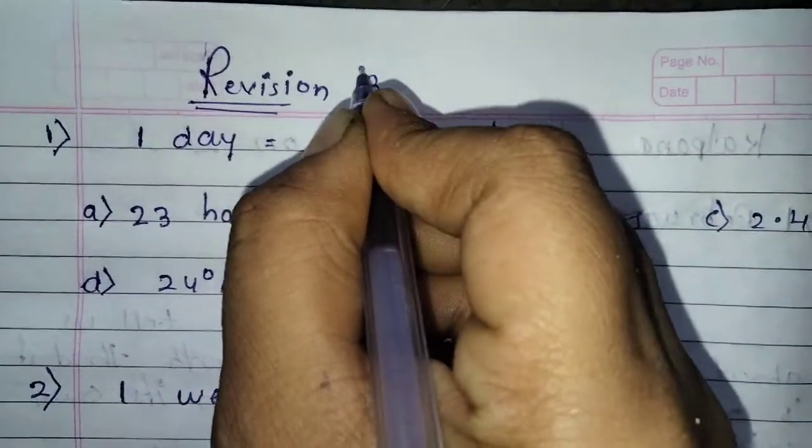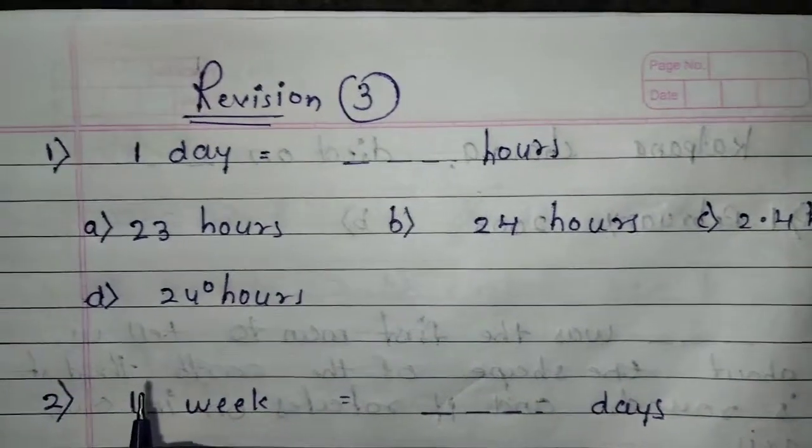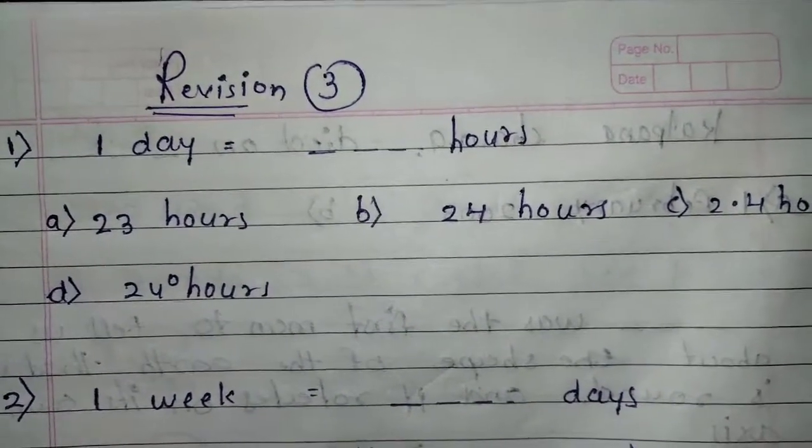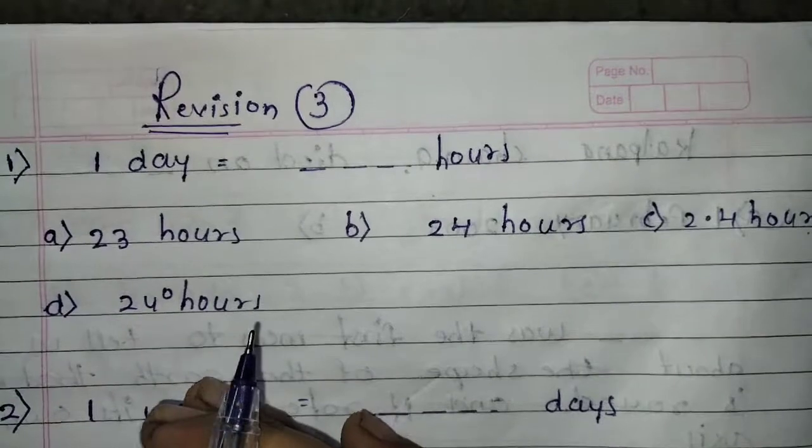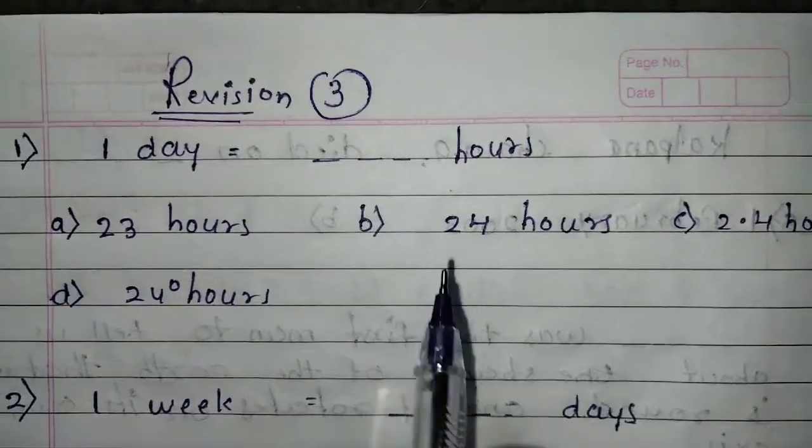Revision 3. One day is equal to how many hours? In one day, children, 24 hours are there. Now you can see here also, 24 hours it is.